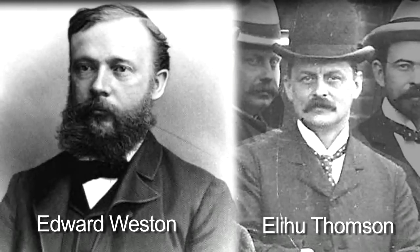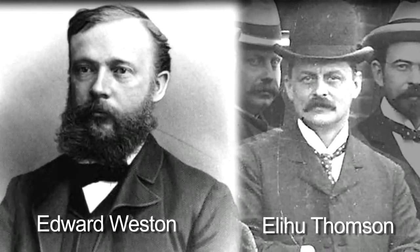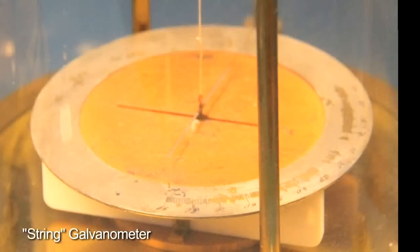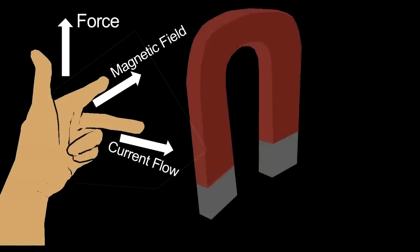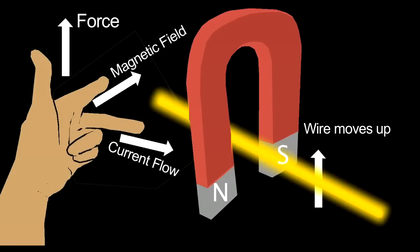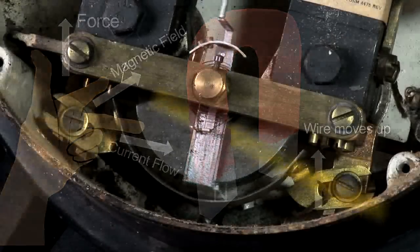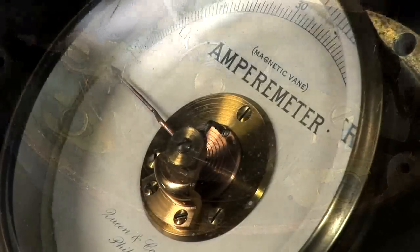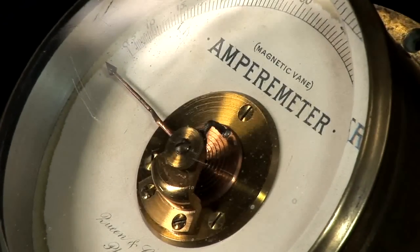Elihu Thompson and Edward Weston saved the electrical industry by developing a meter that worked in a new way. Instead of using compasses which align themselves to the earth's magnetic field, they created movement in the needle using the left hand rule. This is the same concept that makes motors run. This became the basis for the moving coil galvanometer. This type of ammeter and voltmeter dominated for over 100 years.